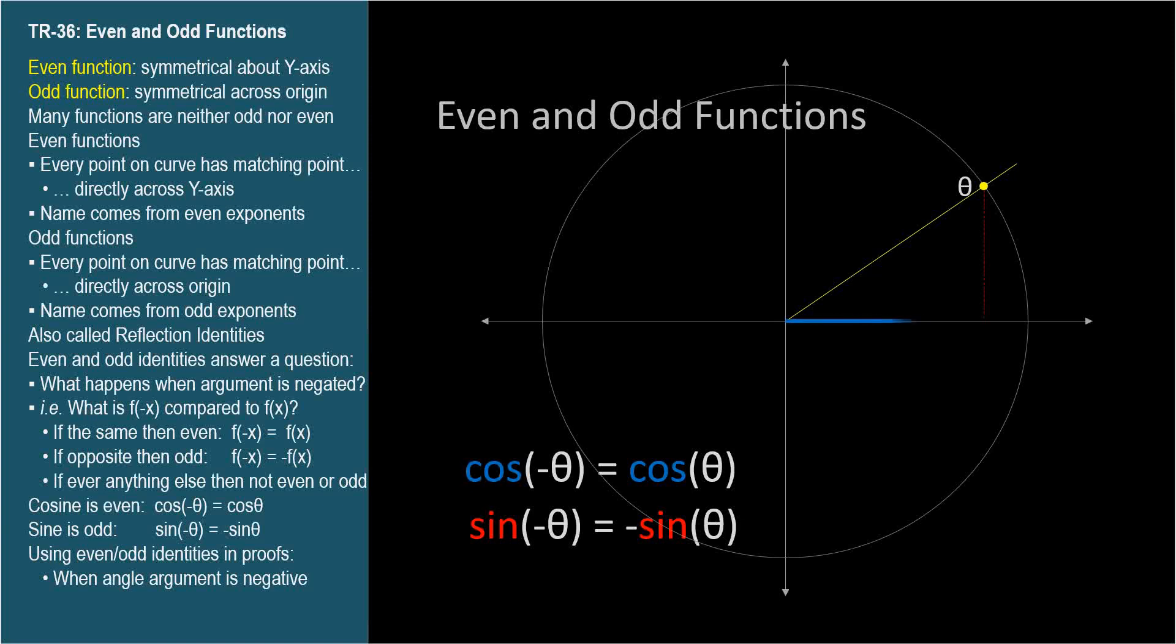Here's the cosine of theta. Here's the cosine of negative theta. Cosine negative theta equals cosine theta. Same.